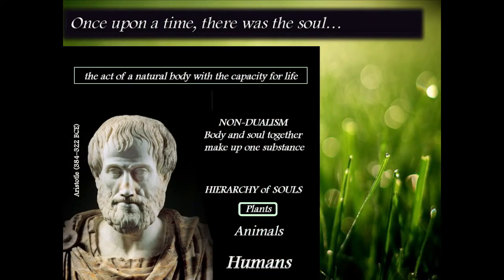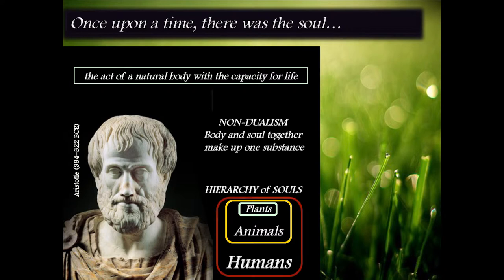He thought the plants are one group, and then the animal contains a particular soul — the sensitive soul — but it's got the vegetative soul included within. And then the human, by default, includes both of those previous two.